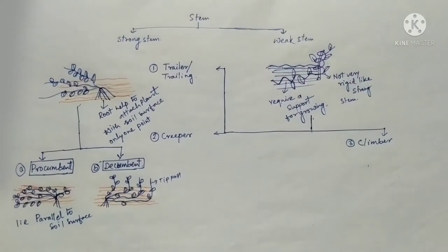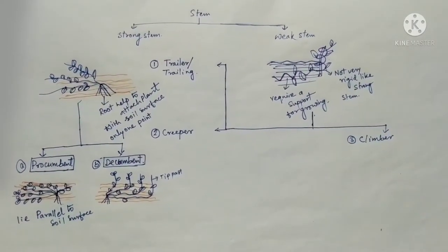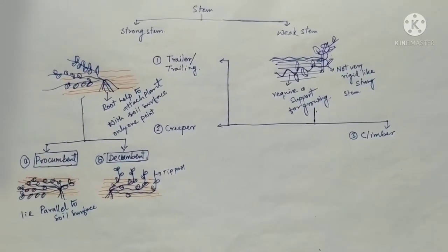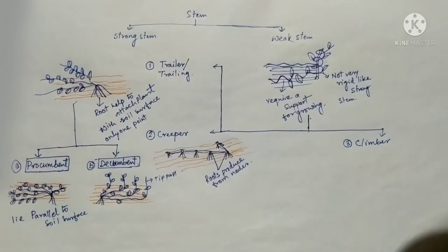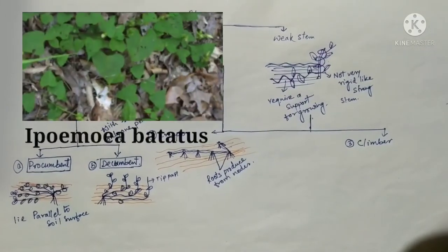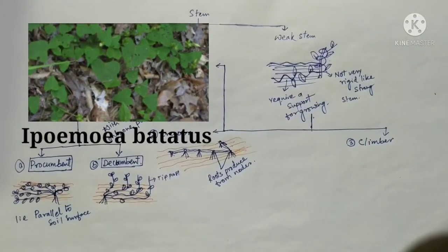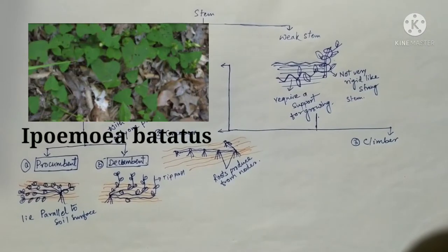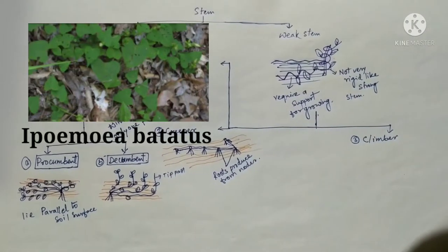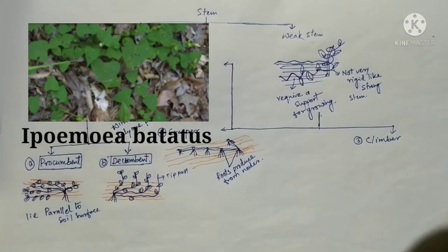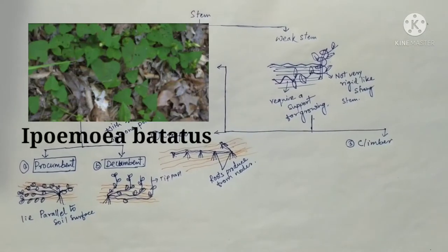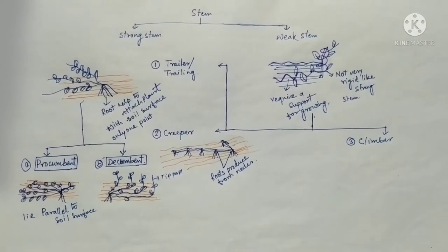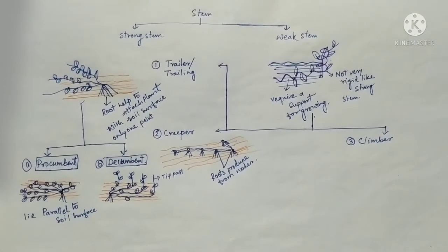In the case of trailers, only one point produces roots. But in the case of creepers, each node produces roots. Roots are produced from each internode. This is the main difference between trailer type stem and creeper type stem.